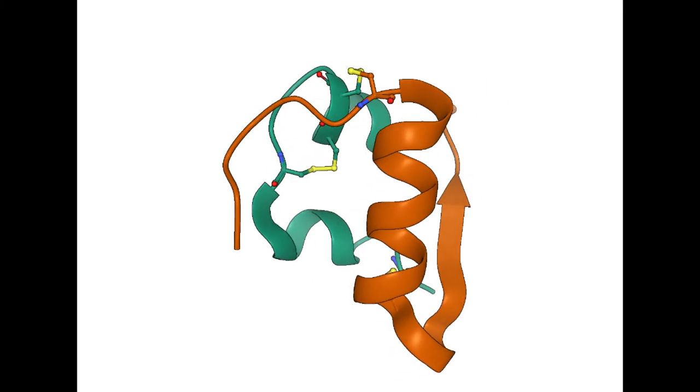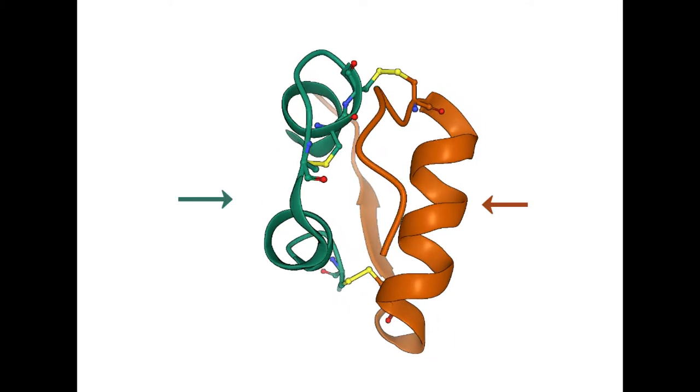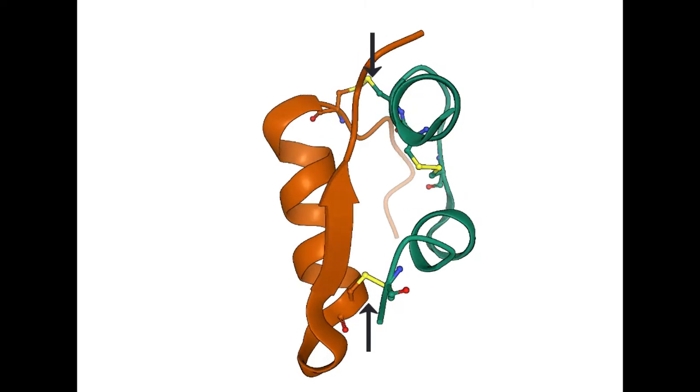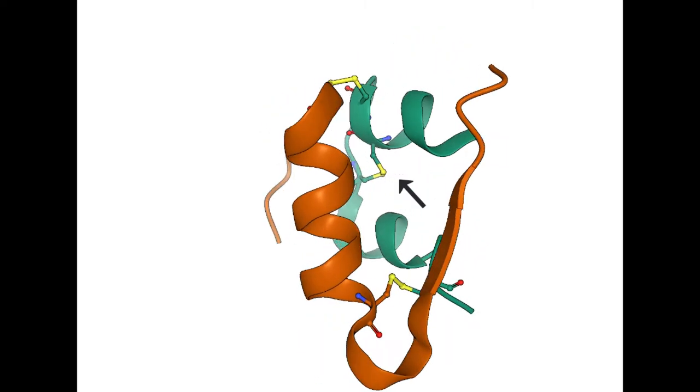The structure of mature insulin is composed of two proteins held together by disulfide bonds, two of them across the chains and one within a chain.